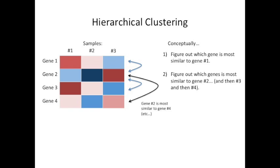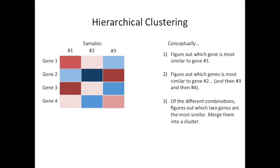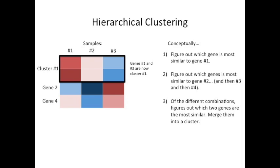In this example, gene 2 is most similar to gene 4. Here's the third conceptual step. Of the different combinations, figure out which two genes are the most similar and merge them into a cluster. In this example, genes 1 and 3 are more similar than any other combination. So, genes 1 and 3 are now cluster number 1.